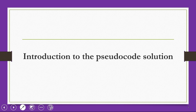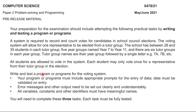The situation here is that we have an election, and you have groups of students for each year from Year 7 to Year 11. The group size ranges between 28 and 35 students, and they are allowed to elect some students from their group. Your program — your pseudocode — must follow three requirements.